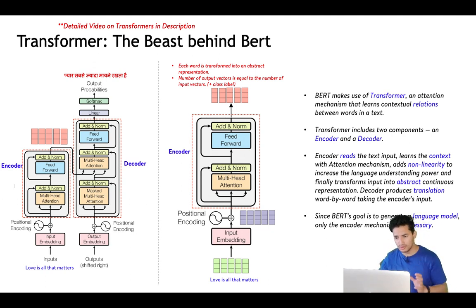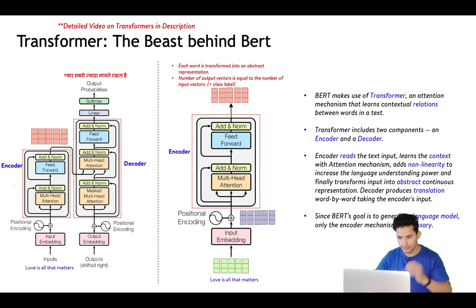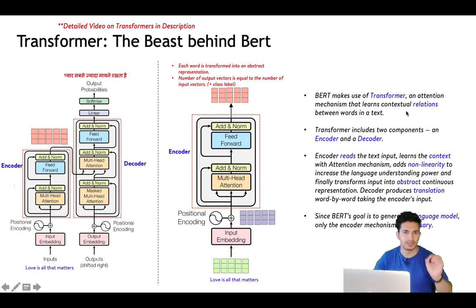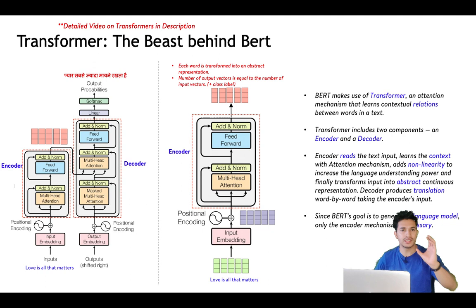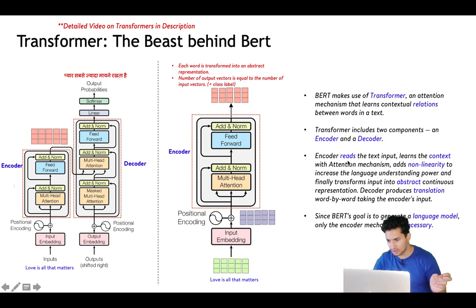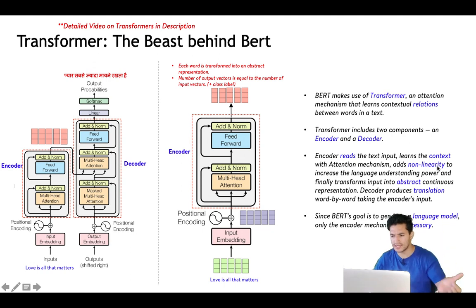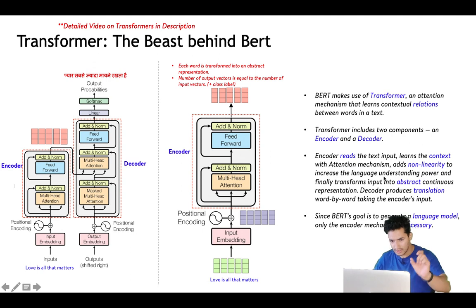BERT only uses the encoder part of the transformer. BERT makes use of the transformer and attention mechanism to learn contextual relationships between words in a text. The transformer consists of two parts — encoder and decoder. The encoder reads the text input and generates encoded representations using multi-headed attention. Each word has its own vector — these are the orange boxes representing encoded representation of each word.